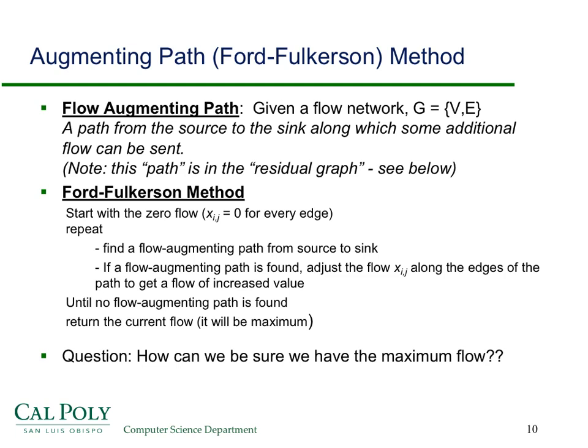The high-level picture of the Ford-Fulkerson method is as follows: you start with zero flow on every edge, then you find a flow augmenting path from the source to the sink and use it to adjust the flow along the edges of the path to get a flow of increased value. If you can find an augmenting path, you're guaranteed you can increase the value of the flow. You keep doing this until you can't find a flow augmenting path, and then you know you're done and you've found the maximum flow.